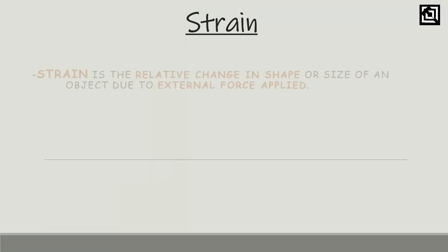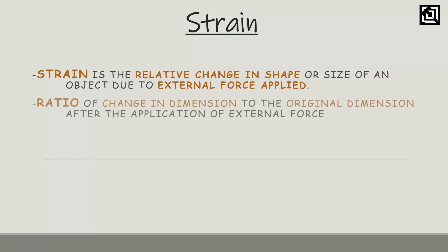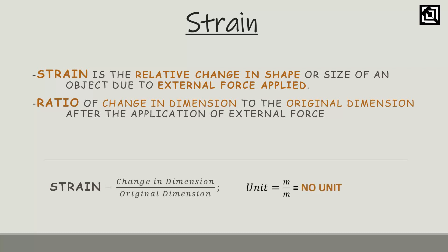Now let's look at strain. Strain is the relative change in shape or size of an object due to an external force applied. If we apply a force to an object, its shape will change, and that relative change in shape is called strain. Strain is a ratio of change in dimension to the original dimension. The formula is: strain equals change in dimension divided by original dimension. Since both units cancel, strain is dimensionless — it has no unit.